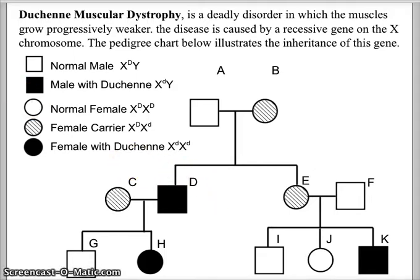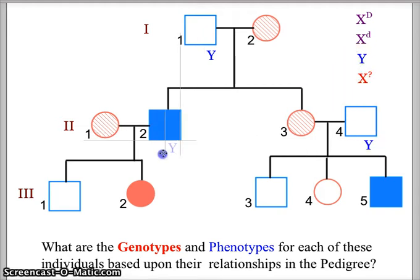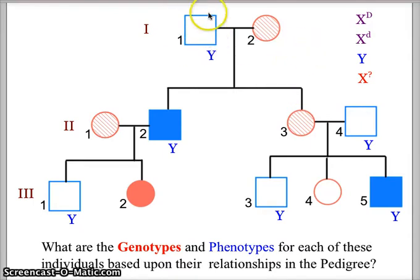Let's figure out the genotypes for these individuals. First, let's put a Y next to all of the males, because all males are going to have the Y chromosome, and in a sex-linked trait the Y chromosome carries no information. This male does not have Duchenne muscular dystrophy, so he would have to have the dominant allele on his X chromosome — he is going to be X capital D, Y.